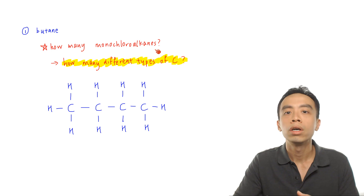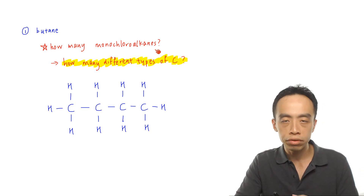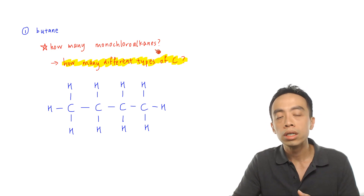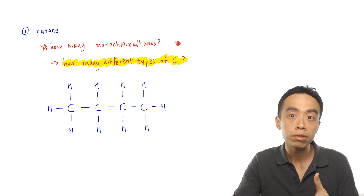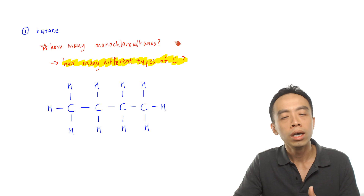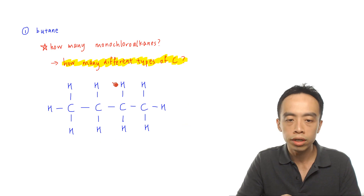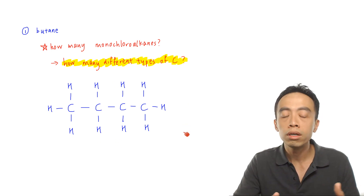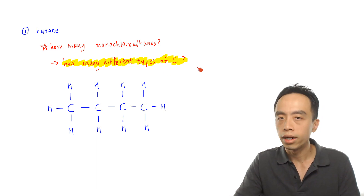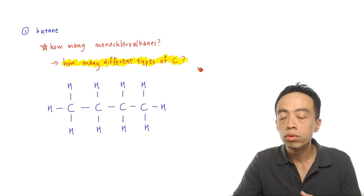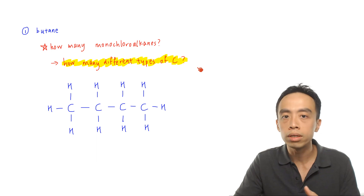If you're given butane and we do chlorination in the presence of UV light, free radical substitution would take place. If we want to predict the total number of mono-chloroalkanes — the mono-substituted products that can be formed — how do we go about doing that? Butane is just a four-carbon straight-chain alkane. The first thing we need to do is determine how many different types of carbon there are in butane, and we can make use of symmetry to do this.